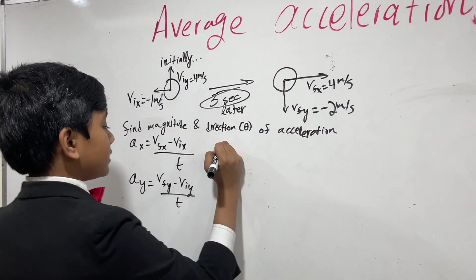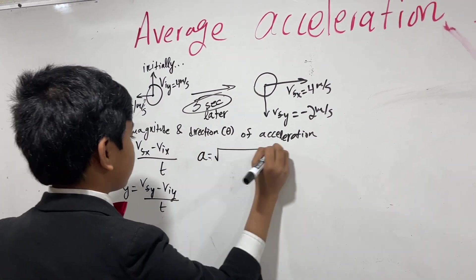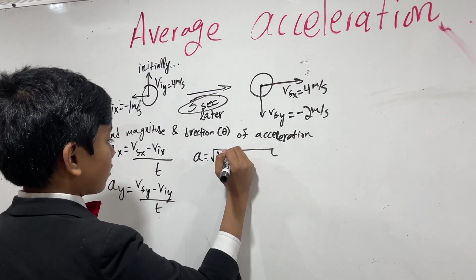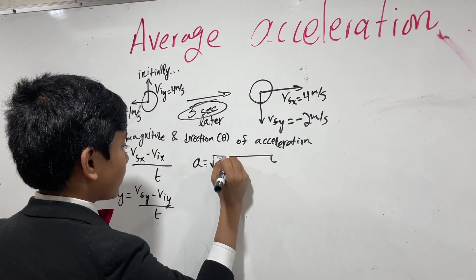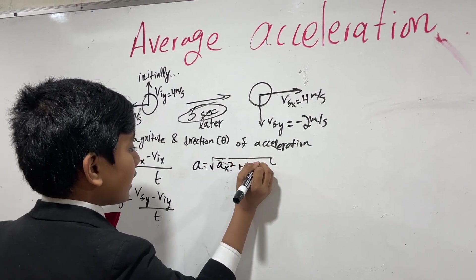And, you also want to find Ay, which is Vfy minus Viy over T. And then, you want to find the total acceleration by square rooting them. So, we have Ax squared plus Ay squared.